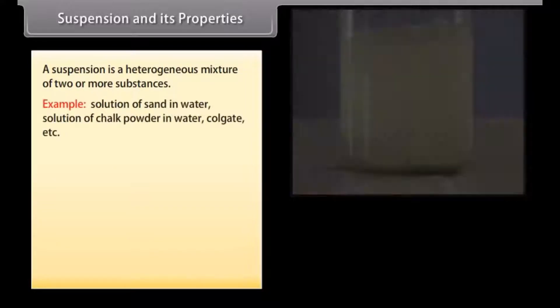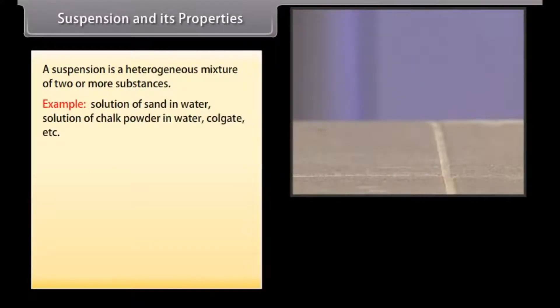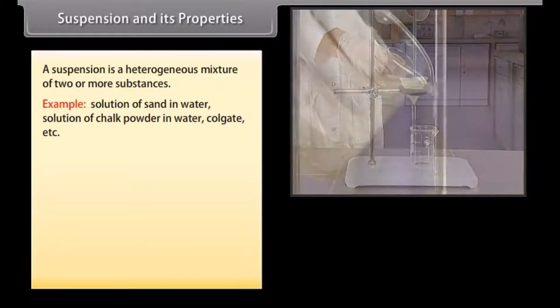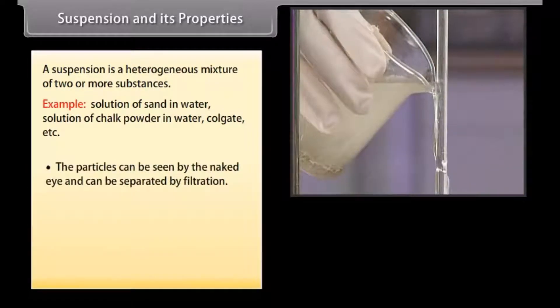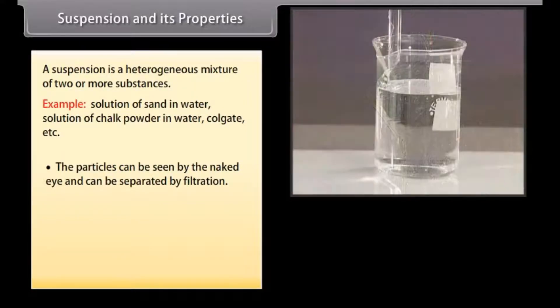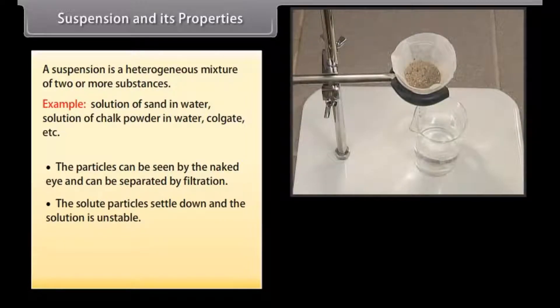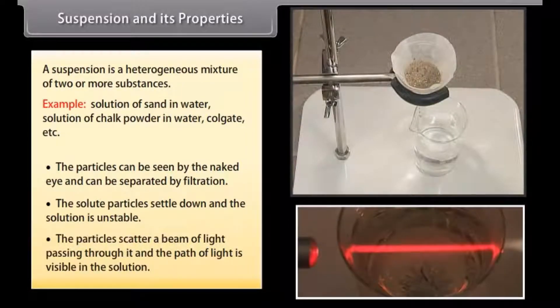Suspension and its properties. A suspension is a heterogeneous mixture of two or more substances. Examples include solution of sand in water, solution of chalk powder in water, and Colgate. The particles can be seen by the naked eye and can be separated by filtration. The solute particles settle down and the solution is unstable. The particles scatter a beam of light passing through it and the path of light is visible in the solution.